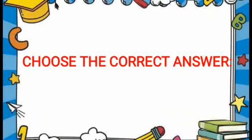Now choose the correct answer. Building friendly relations with other countries is one of the duties of the central government. The president is the supreme commander of the armed forces. Each state has a governor and a chief minister. Big cities are governed by municipal corporations. The supreme court is the highest court in India. The answers are: central government, president, governor and chief minister, municipal corporations, supreme court.